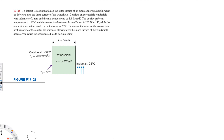This problem is asking to defrost ice accumulated on the outer surface of an automobile windshield, where warm air is blown over the inner surface. The windshield has a thickness of 5 millimeters and a thermal conductivity of 1.4 watts per meter Kelvin. The outside ambient temperature is negative 10 degrees Celsius with a convection heat transfer coefficient of 200 watts per meter square Kelvin, and the inside ambient temperature is 25 degrees Celsius. We need to determine the convection heat transfer coefficient for the warm air blowing over the inner surface necessary to cause accumulated ice to begin melting.